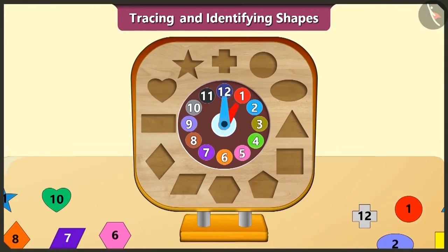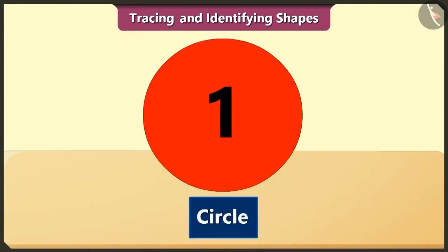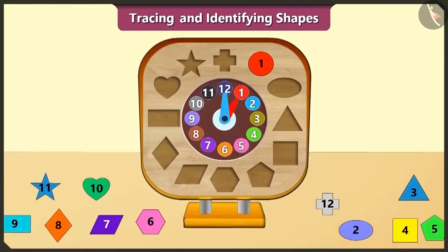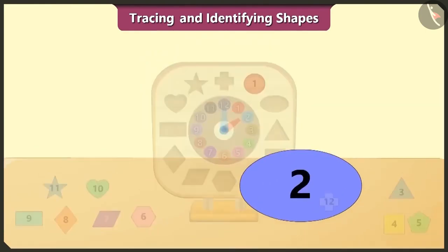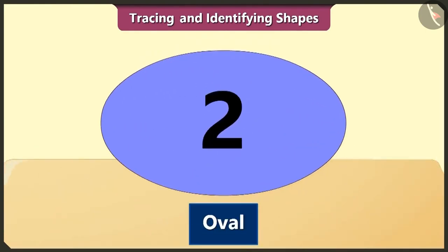The circle is first in order. The oval is second in order. This shape is like an elongated circle. It is also called ellipse.